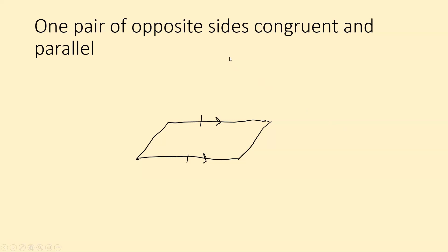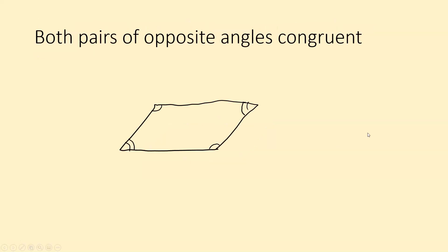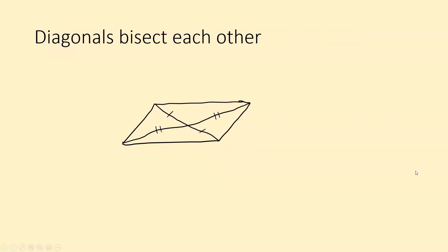One pair of opposite sides congruent and parallel — it has to be the same pair. So in this case, this side is congruent and parallel to this side. Both pairs of opposite angles congruent means this angle is congruent to this angle, and this angle is congruent to this angle. And diagonals bisect each other means they cut each other exactly in half — this half is congruent to this half, and this half is congruent to this half.